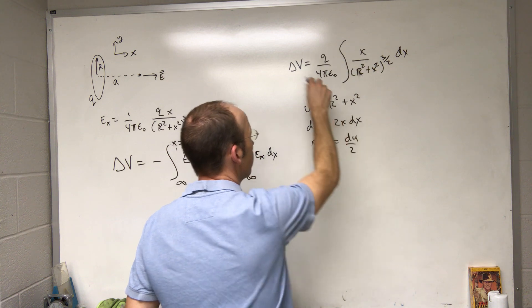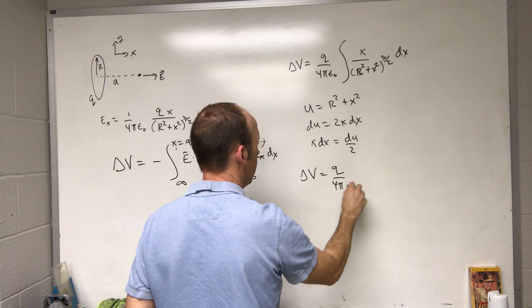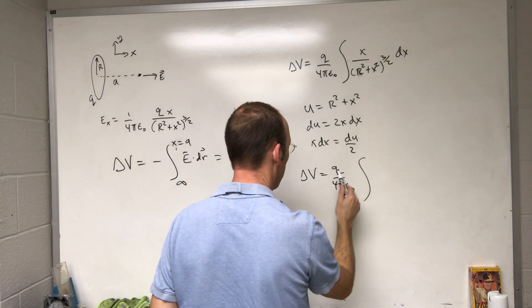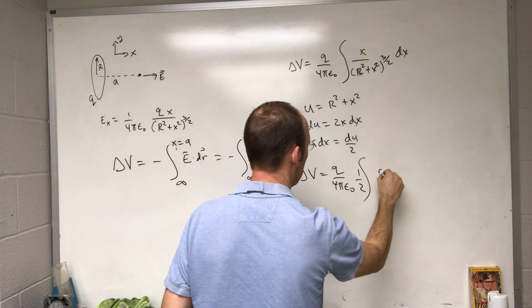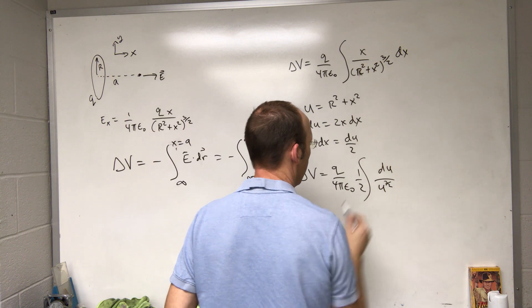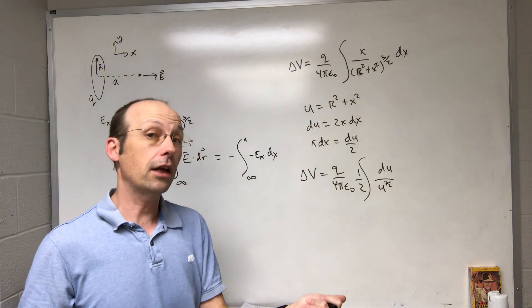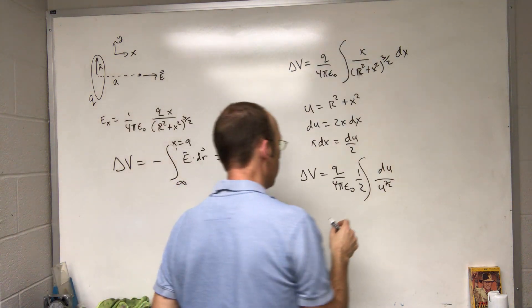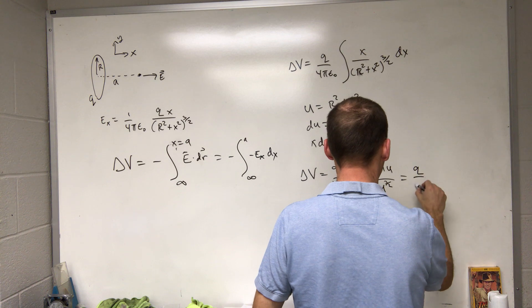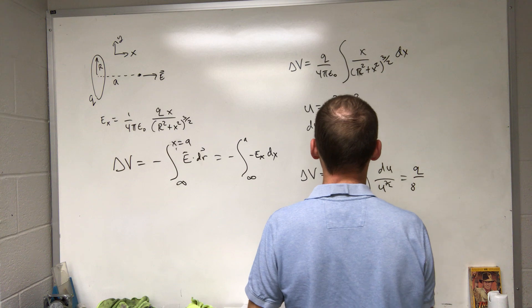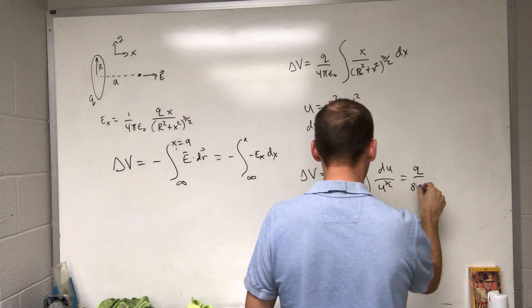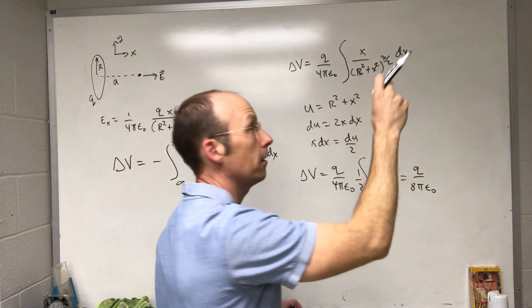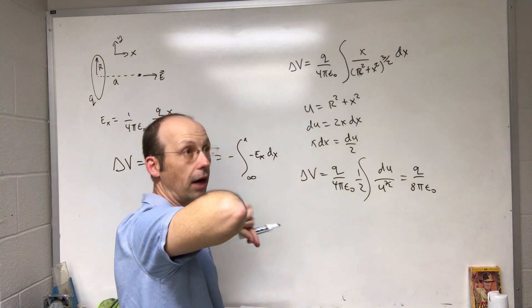Now my integral becomes ΔV = Q/4πε₀ — leaving off the limits for now since you have to change them — times (1/2) · ∫ du / u^(3/2), which is u^(−3/2) du. I integrate that by adding 1 to the power, getting u^(−1/2). Switching back to x gives Q/4πε₀ times 1 / √(R² + x²).